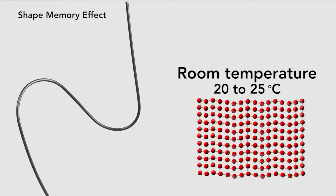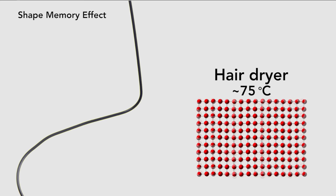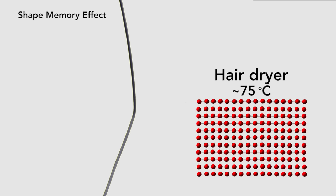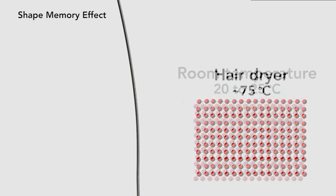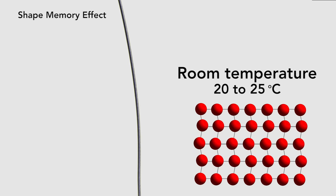When I heat it with a hairdryer, the tidy, neat squares return and the wire becomes straight again. And then as it returns to room temperature, the twin structure returns, the one with an equal number of both rhombuses.